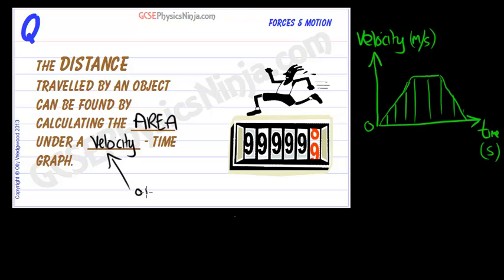but it could be speed as well. But it's best we stick with velocity, as velocity, remember, is speed in a certain direction, and that will always work when we're finding the area underneath. We will find the distance that's travelled.